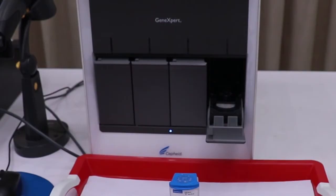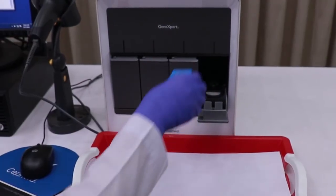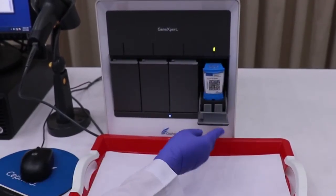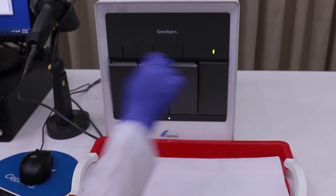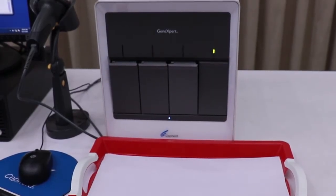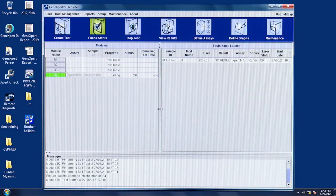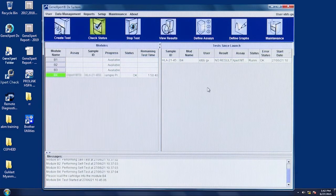Load the cartridge firmly into it and close the door. The test starts, and the green light stops blinking. Wait until the system releases the door lock at the end of the run. It will take nearly two hours for Expert MTB-RIF Test.